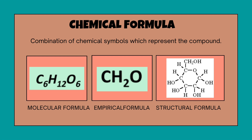The molecular formula for a compound can be the same as or a multiple of the compound's empirical formula. Molecular formulas are compact and easy to communicate; however, they lack information about bonding and atomic arrangement, which is provided in a structural formula. A structural formula indicates both the number of atoms and their arrangement in space.